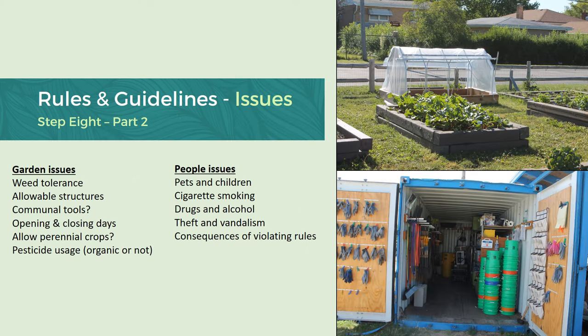The second part would be more of the rules and guidelines — what are the issues that come up? Garden issues could include weed tolerance and allowable structures. As shown here, are you going to allow more elaborate mini hoop houses to remain through the winter? And are you going to allow people on site for winter, or do you have opening and closing dates for the season?